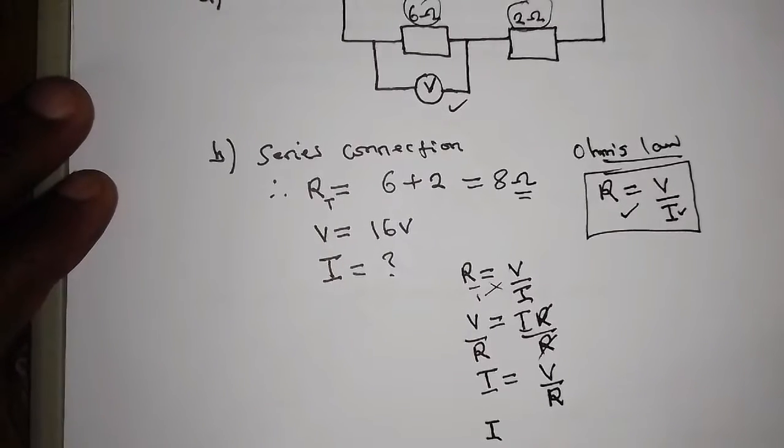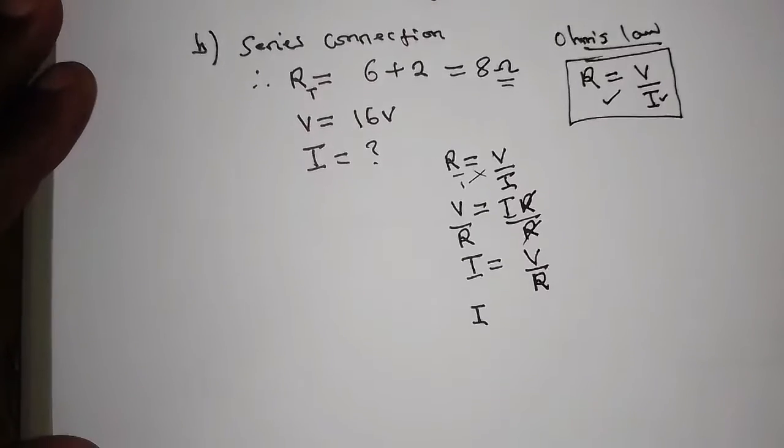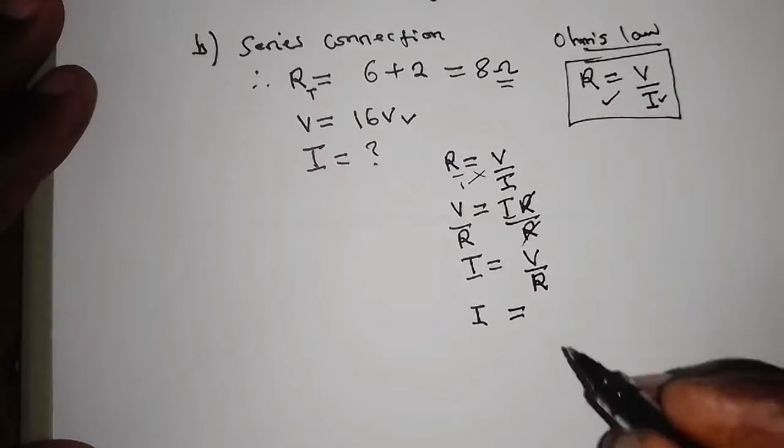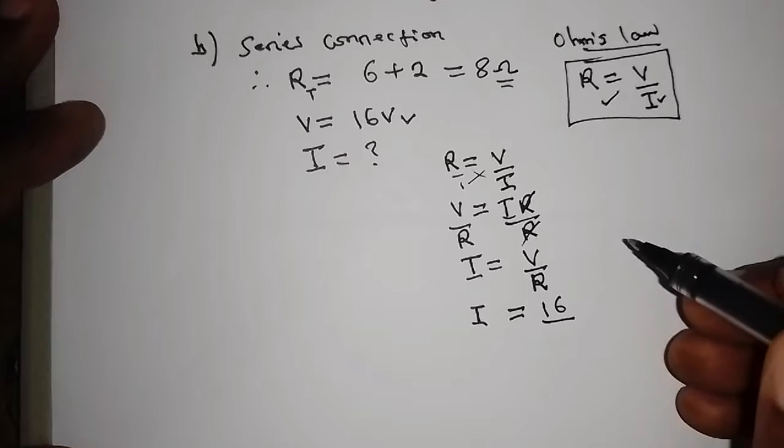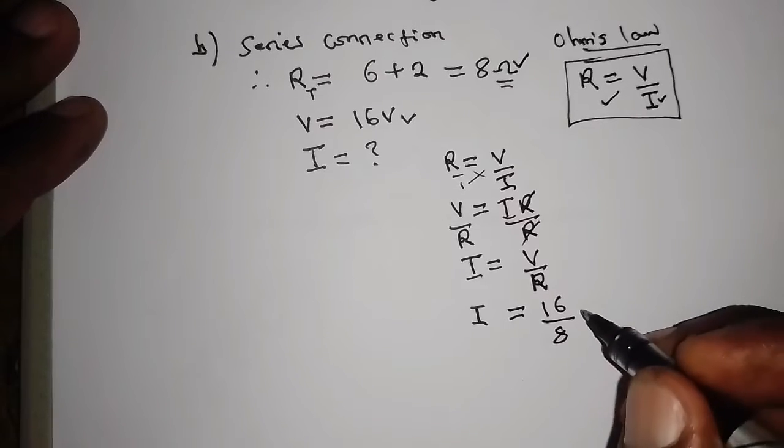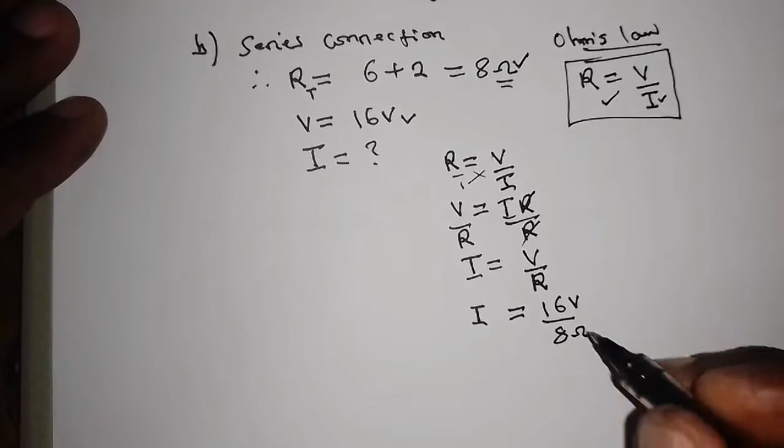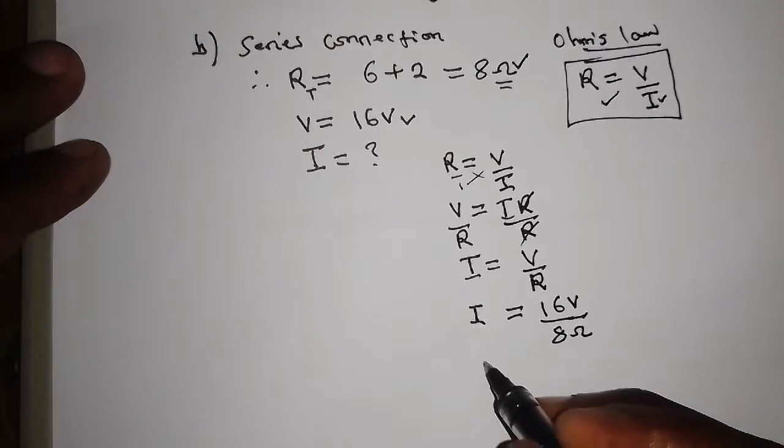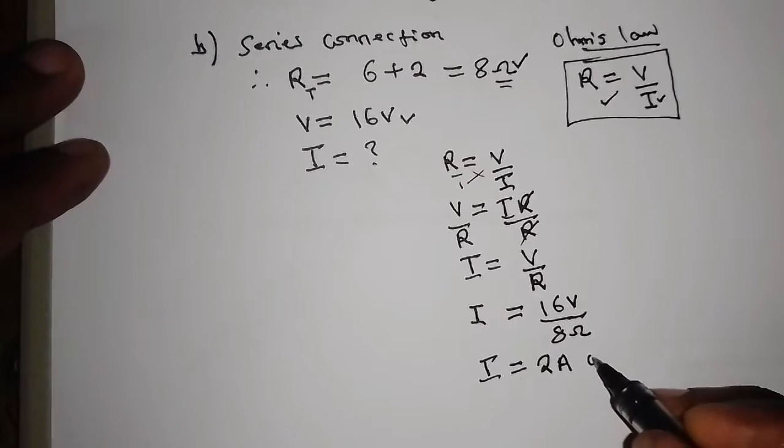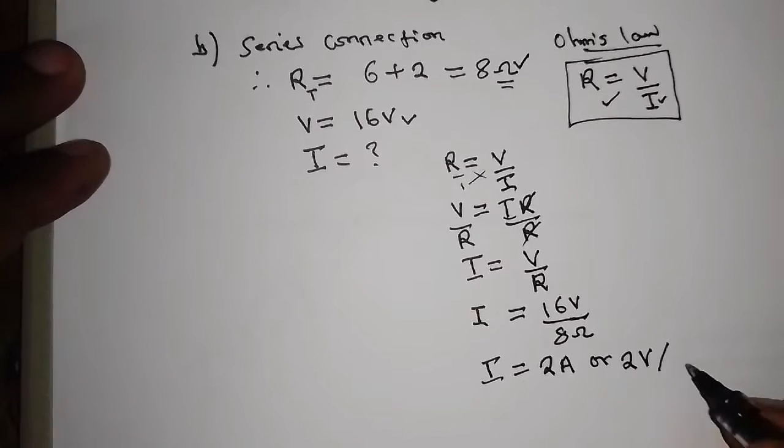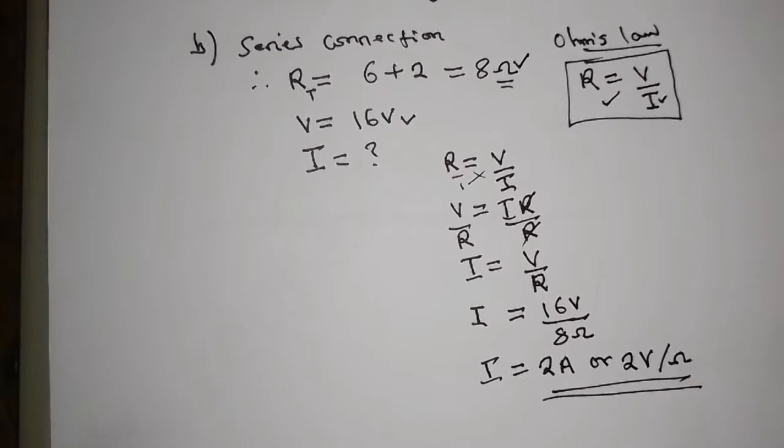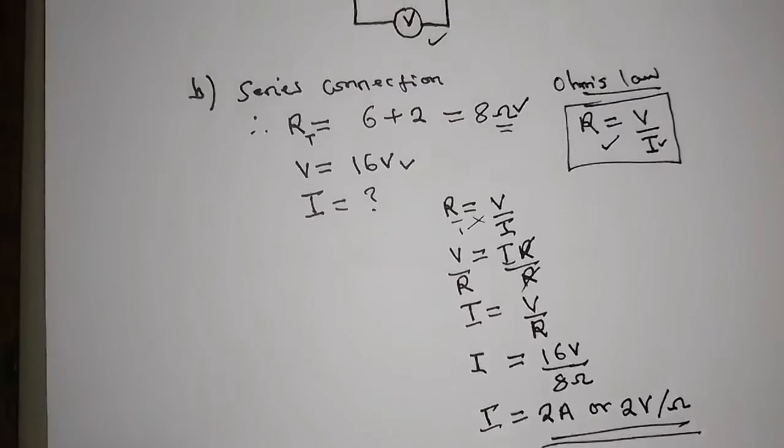So therefore, our I is going to be, the voltage is 16 divided by our resistor, total resistor combined is 8. So our I is just equal to 2 amps. So that's how you can go about solving that equation B.